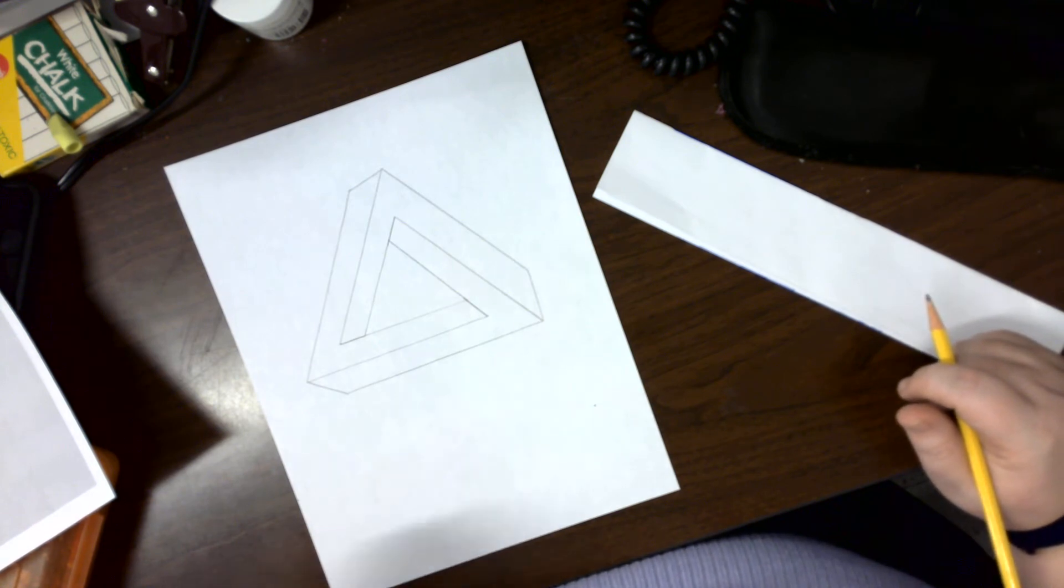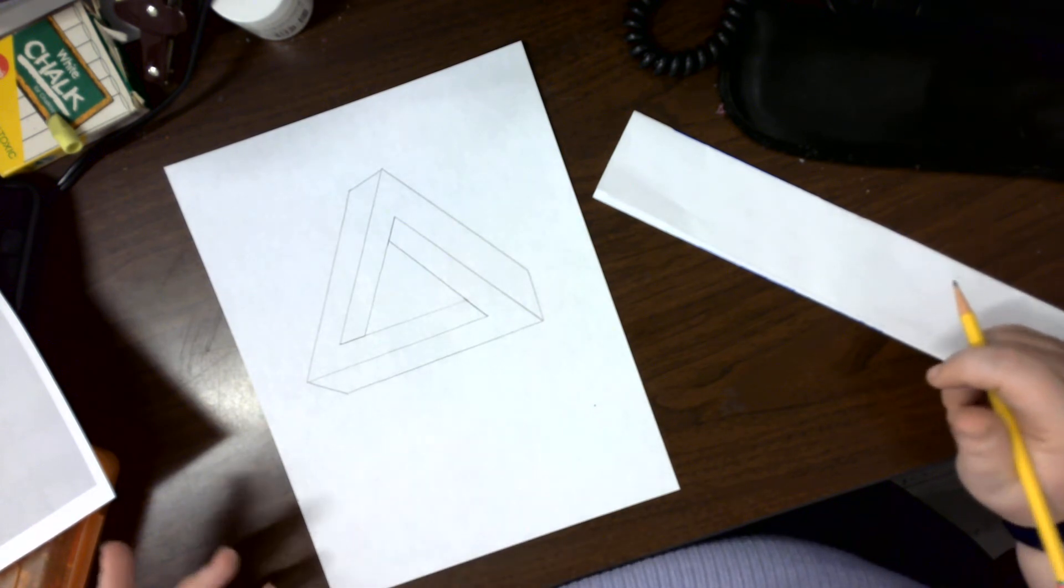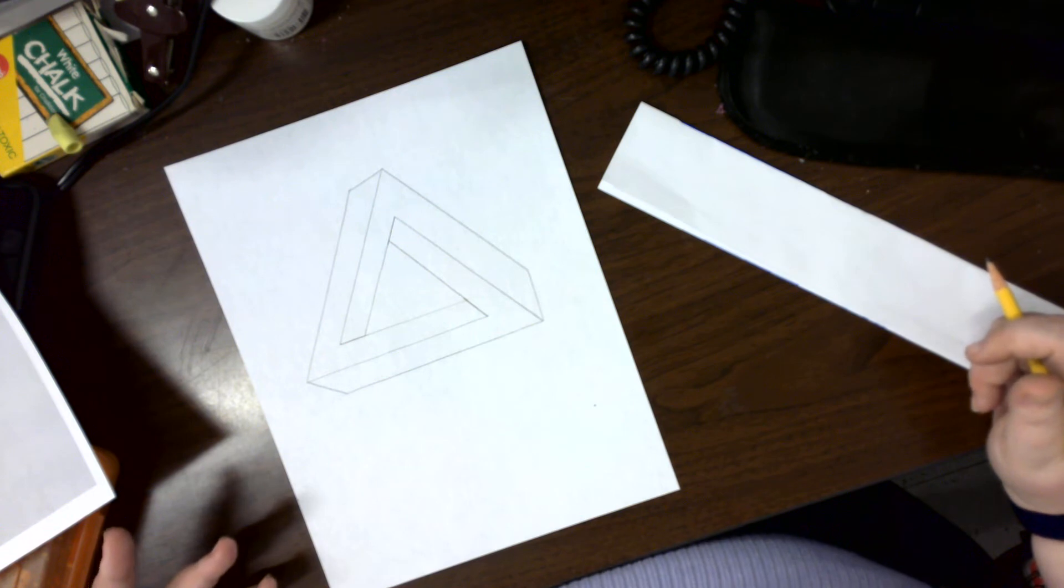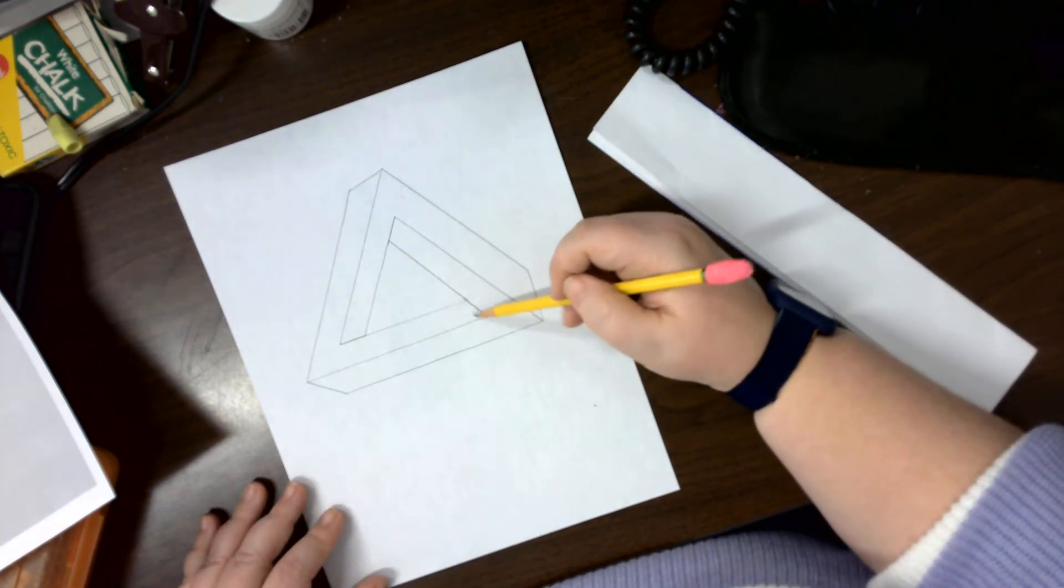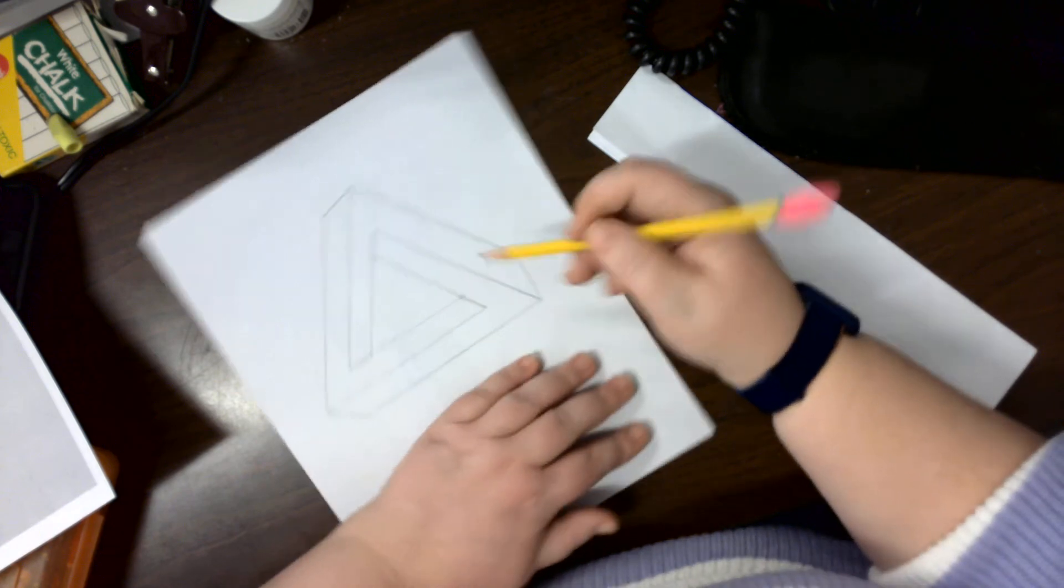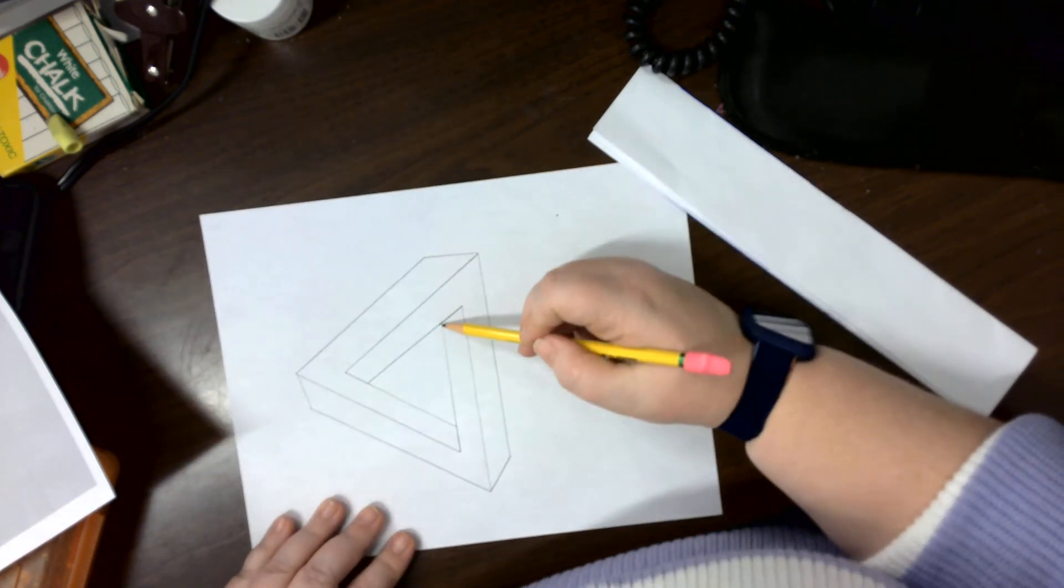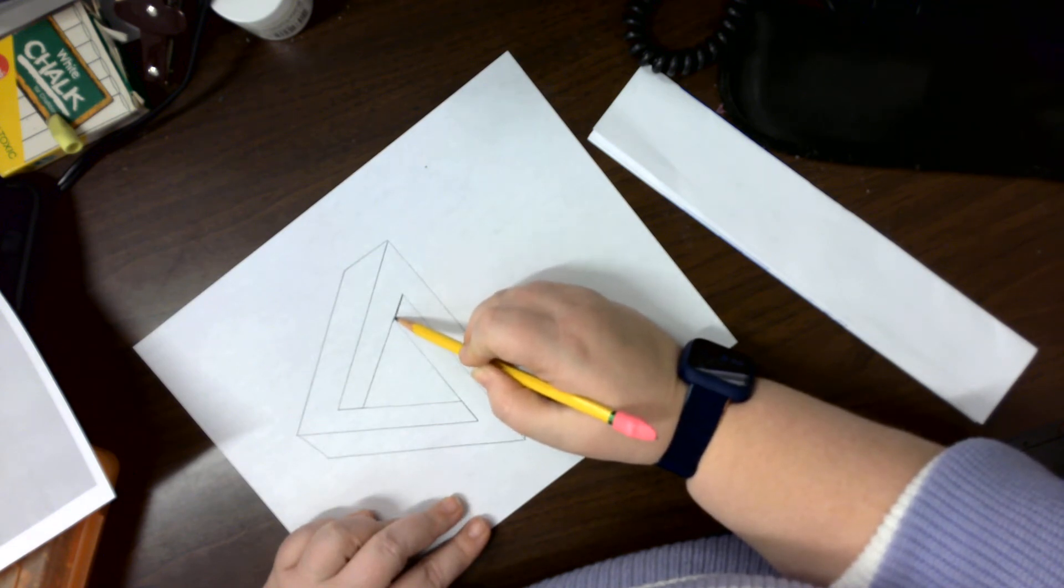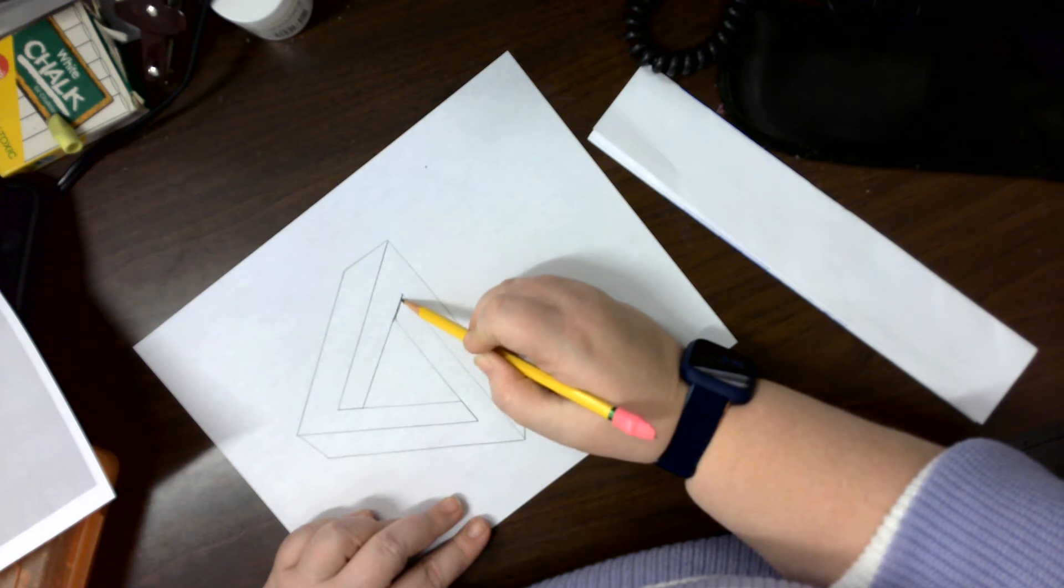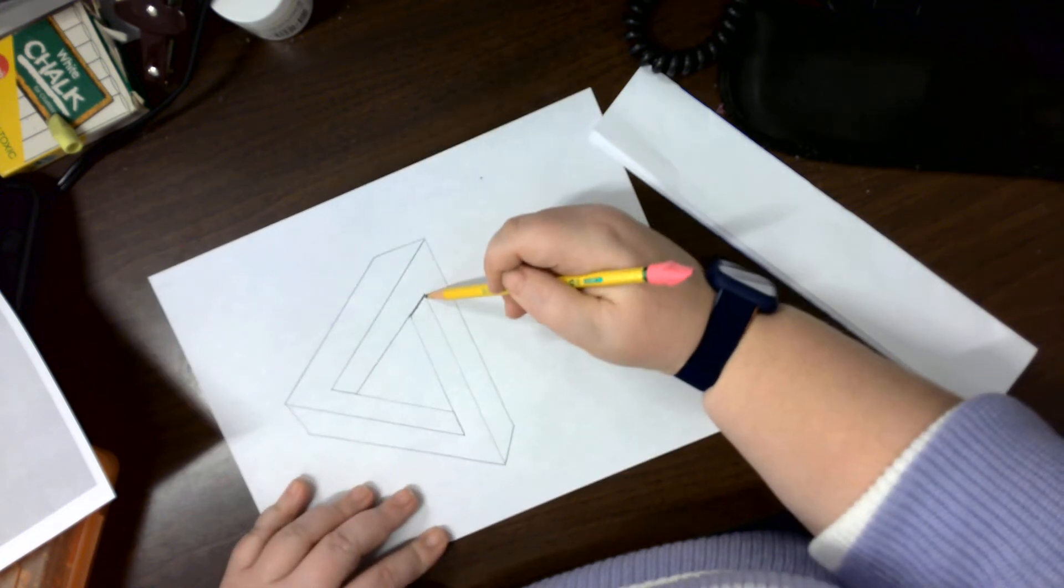The next part that we're going to need to do is add our shading. Anywhere where this line comes in and is blocked off by another line, we're going to add shading in that area. When you add shading, you want it to be darkest right up against the other line. As it comes out, it's going to get lighter so that it'll fade into the other side.